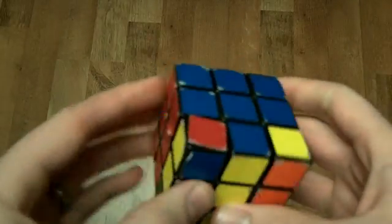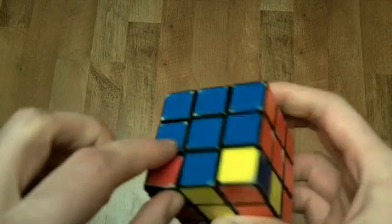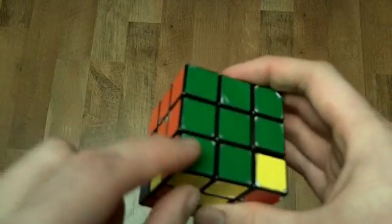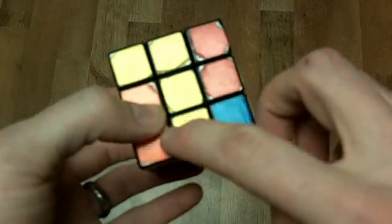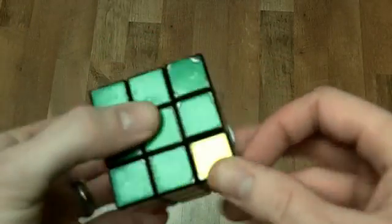And there we have the blue and red right there, the blue and orange right here, green and orange, green and red. So all corners are where they're supposed to be.